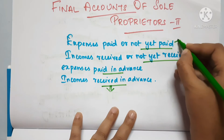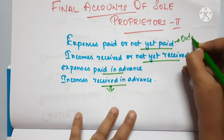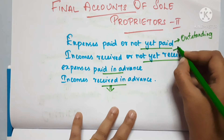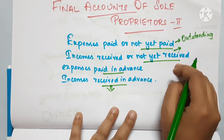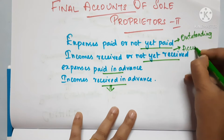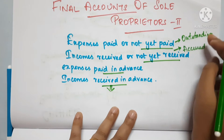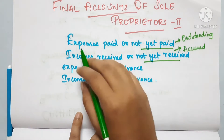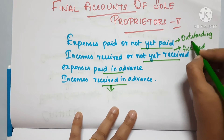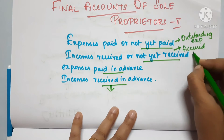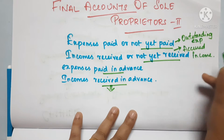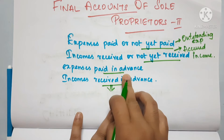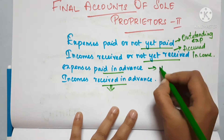If expenses are not yet paid, the term is 'outstanding.' If income is not yet received, it is called 'accrued.' There are two different terms but the meaning is the same. For expenses we say outstanding expenses, and for income we say accrued income. Expenses paid in advance are called prepaid expenses.